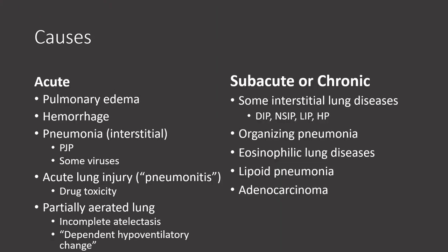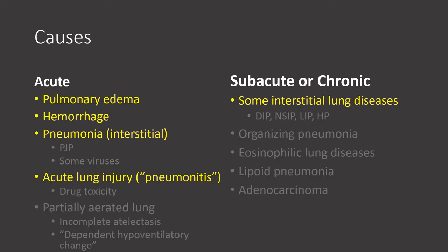Causes of ground glass opacity are again easily divided into acute or subacute, similar to consolidation. In the acute setting, common causes include pulmonary edema, hemorrhage, pneumonia — particularly interstitial pneumonias such as PCP or viral pneumonias — and acute lung injury. On the subacute or chronic side, we consider some interstitial lung diseases. To go further into detail at this point would be beyond the scope of this lecture.